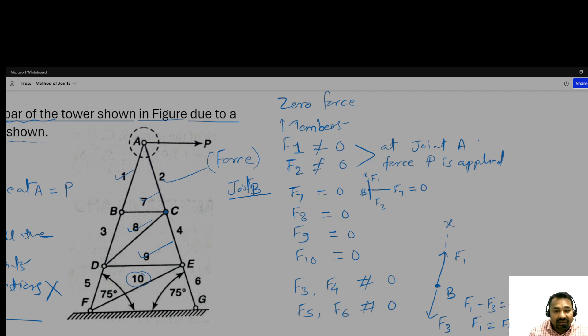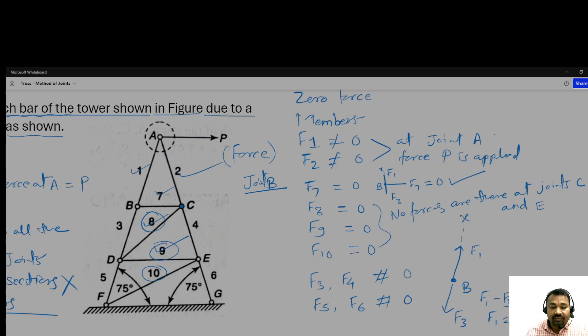At joint C, you can see no forces are acting at C and E. No forces are there at joints C and E. That's why F9 and F10 will be zero, and it is like F7 and F9 also can be zero.